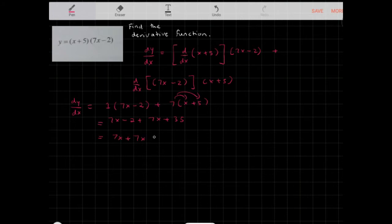I get 7x + 7x - 2 + 35, which is 14x + 33. Okay, so this is basically your derivative.